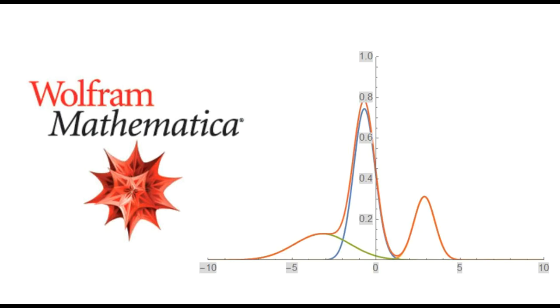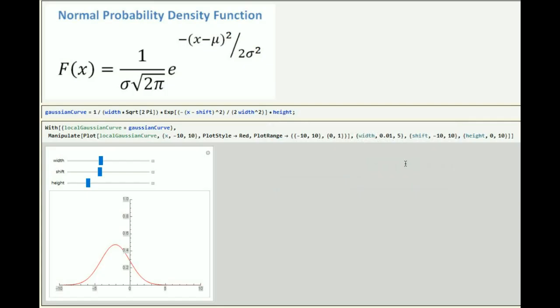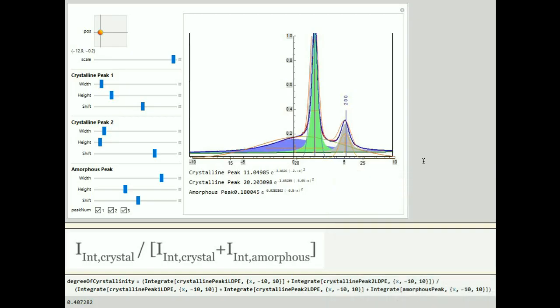I set out to create a peak fitting software to calculate degree of crystallinity for semi-crystalline polymers using Mathematica. The basic idea for this program is that the user will define a series of Gaussian peaks using this equation. The width, the height, and the exposition of these peaks can be manipulated. This code allows the user to adjust the appearance and position of multiple peaks and match it to an existing XRD pattern.